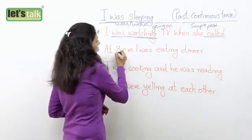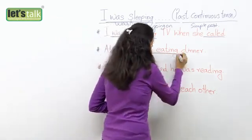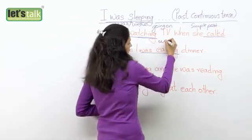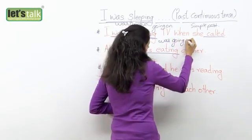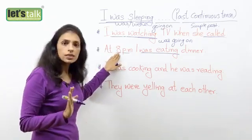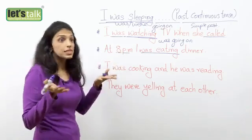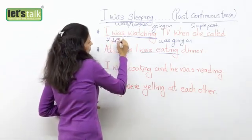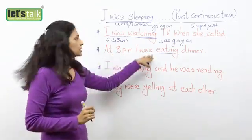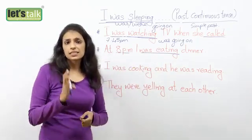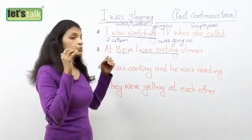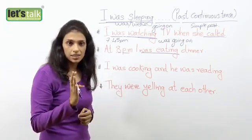Another example: at 8 pm I was eating dinner — when the clock struck 8, this action was going on. This does not mean I started eating at 8 pm; I may have started at 7:45. It has no relevance; what matters is that at 8 pm I was eating. For example, last evening at 6 o'clock it was raining — it may have started at 5:30, but at 6 o'clock it was raining. The action was going on in the past.